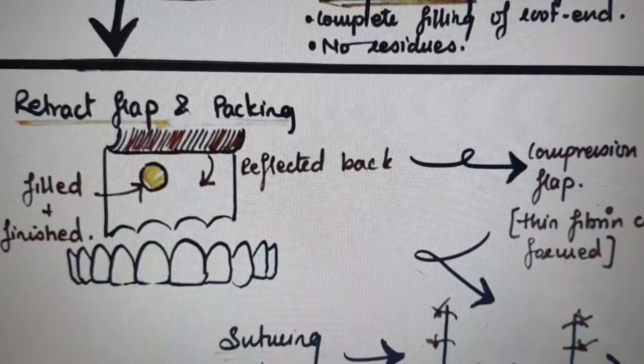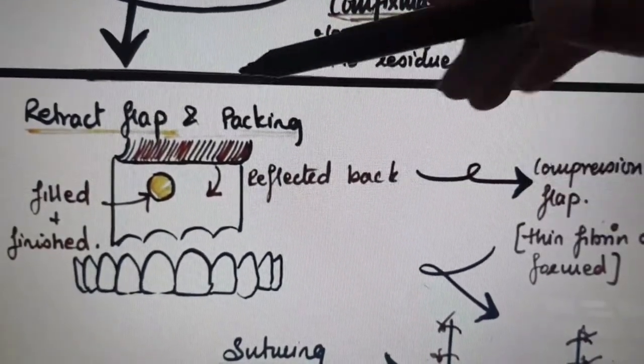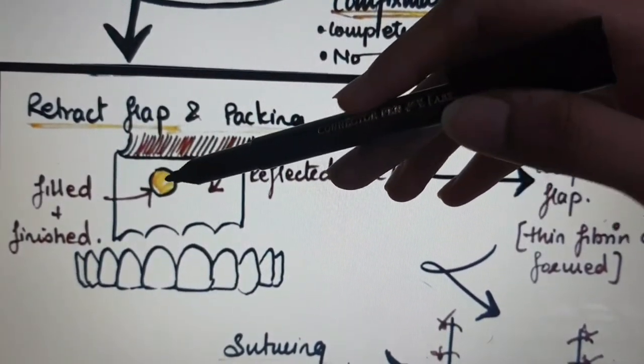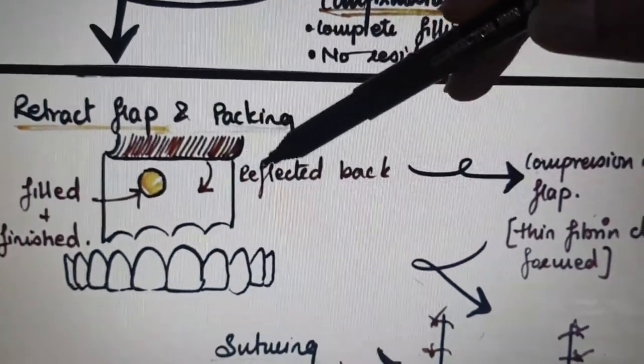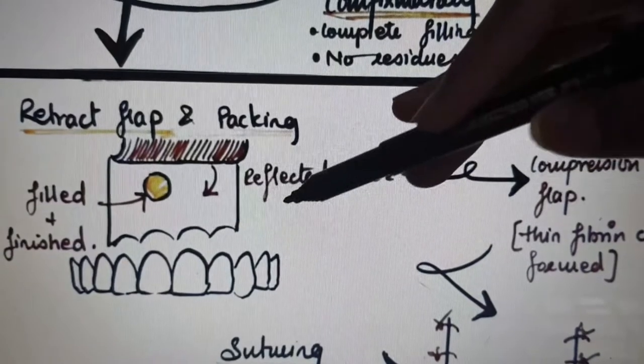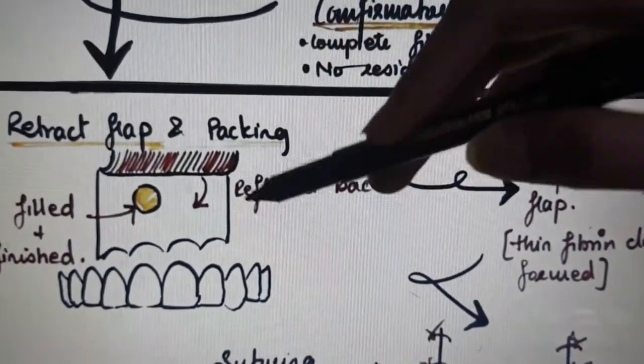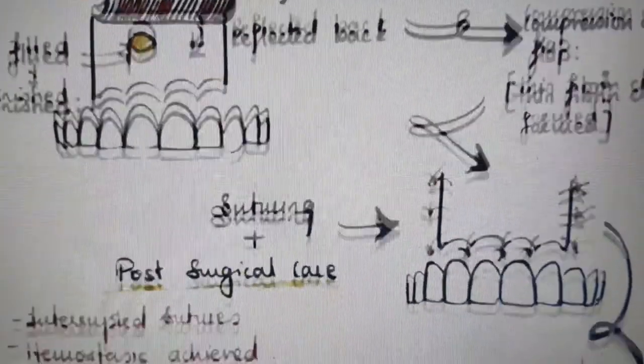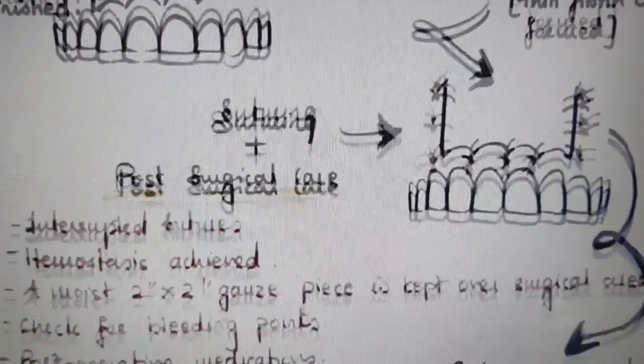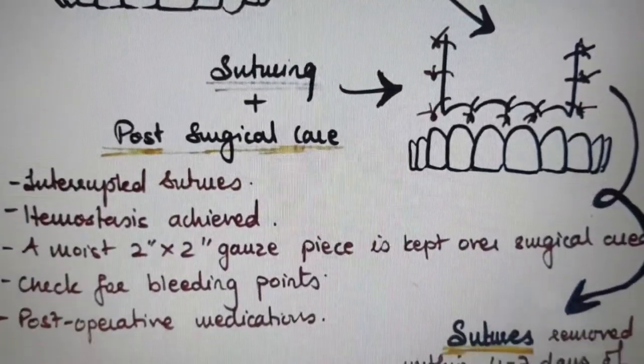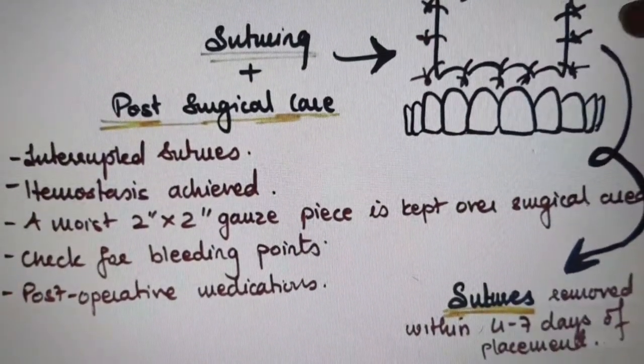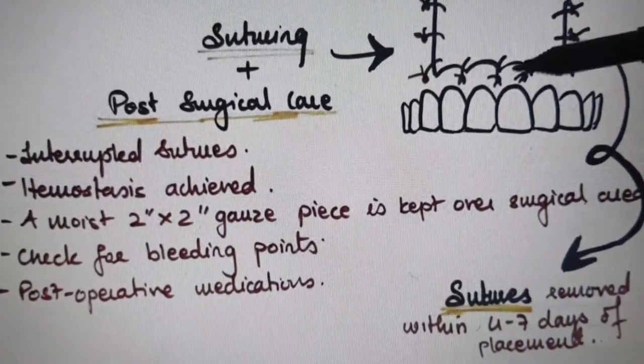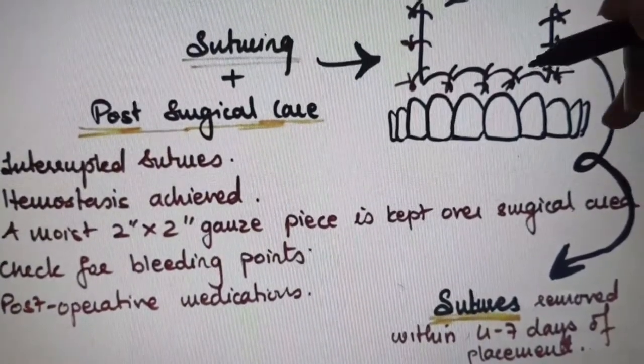The next step is retract flap and packing the area. The flap is retracted back once you pack the area with packing materials, then compress the flap back. Make sure you don't tear the flap. A thin fibrin clot should be formed. After repositioning the flap and applying compression, keep the repositioned flap moist with 2x2 moist gauze until suturing begins. This compression results in a thin fibrin clot in the wound site, which is good for healing.